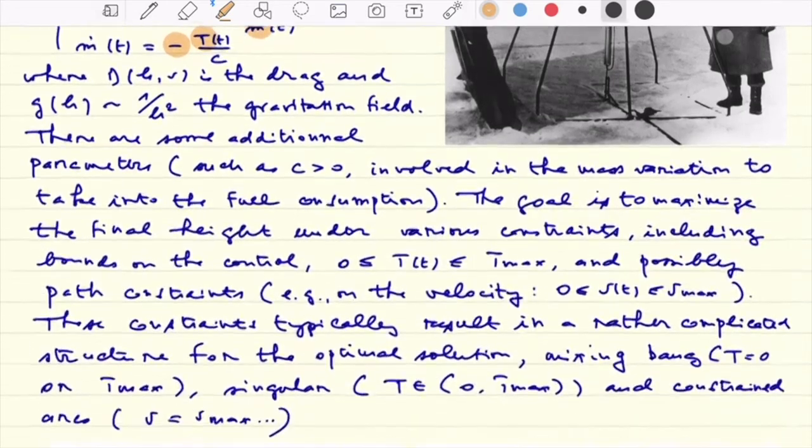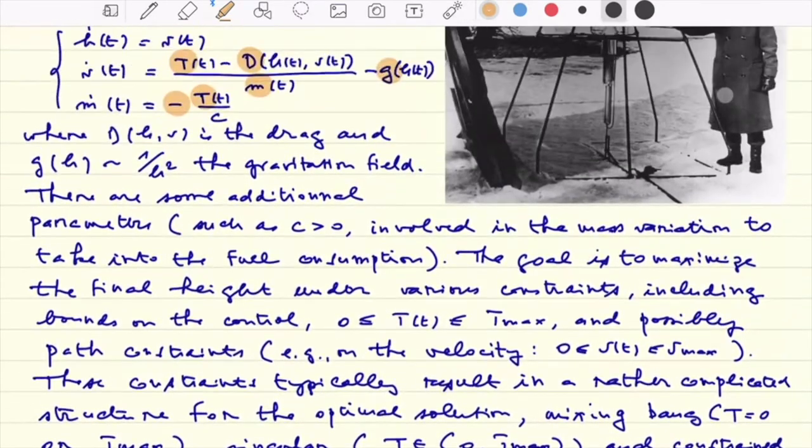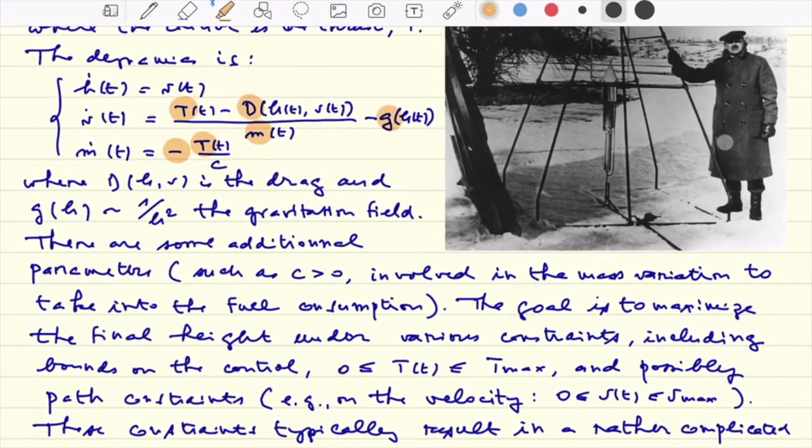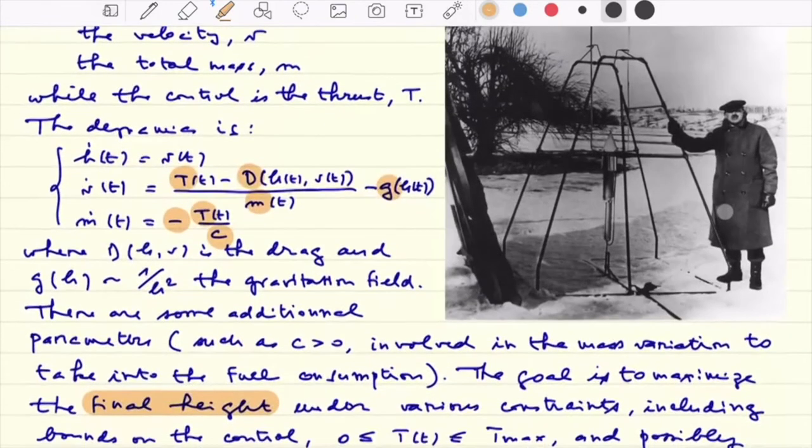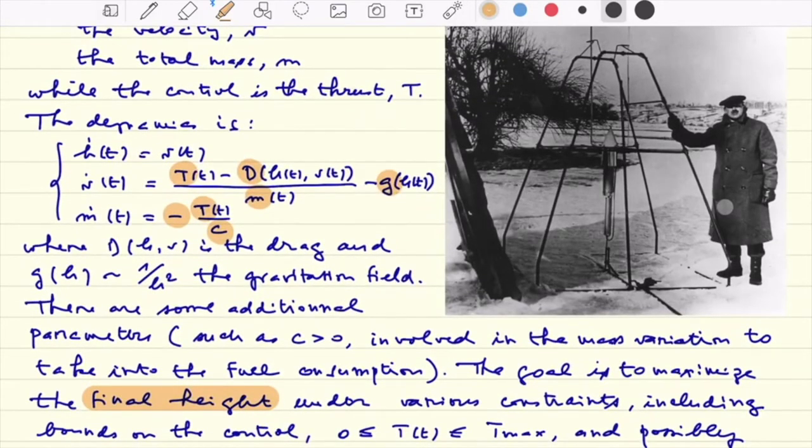There are some additional parameters in the system. You might have noticed some constant C here and so on. And the goal, as I mentioned before, is to maximize the final height of the rocket. I should have written some place that the final time is not fixed, so the final time is free. So we want to maximize h of TF where TF is free.